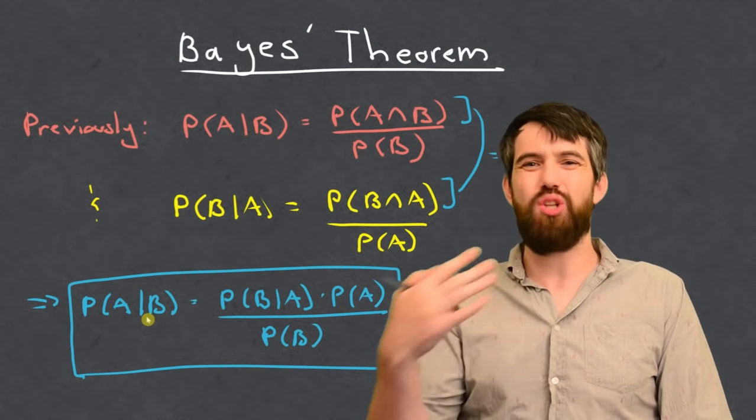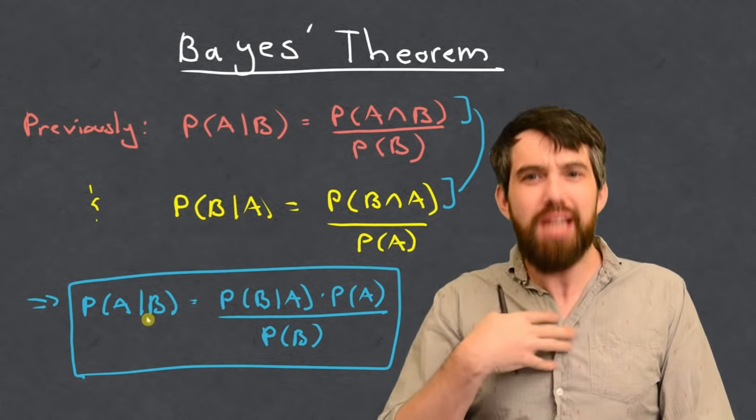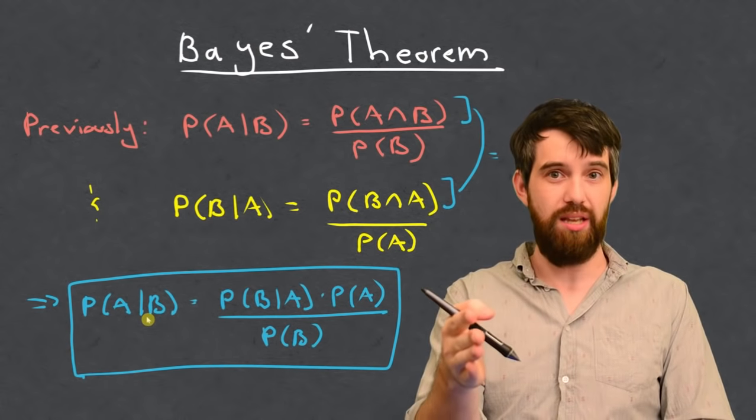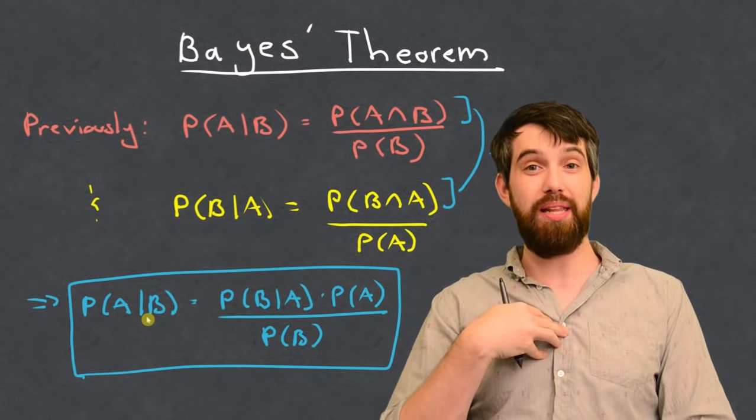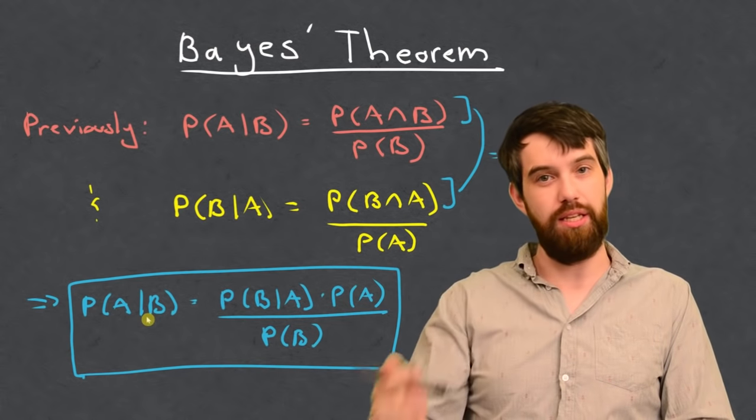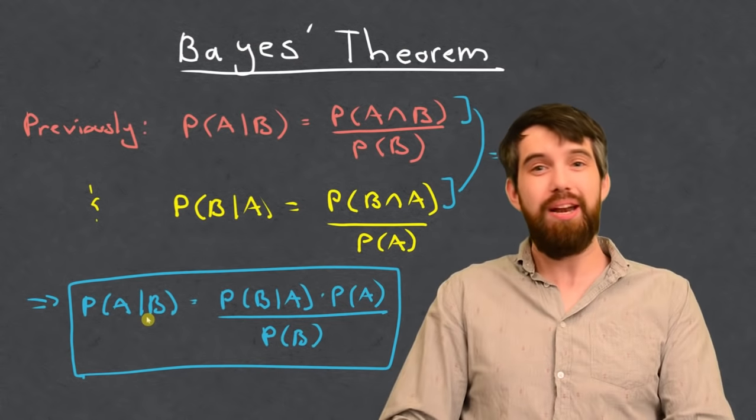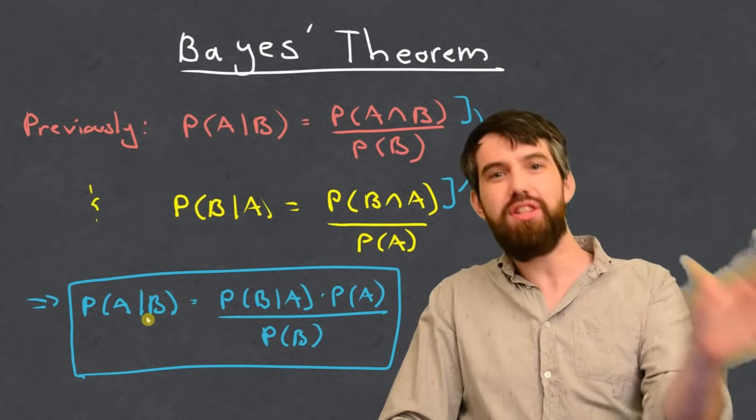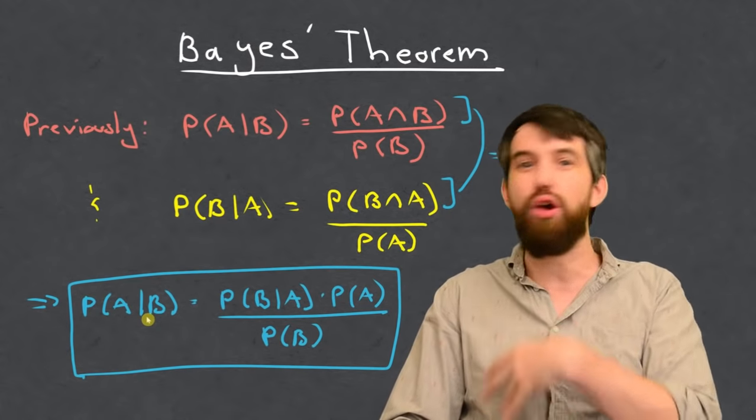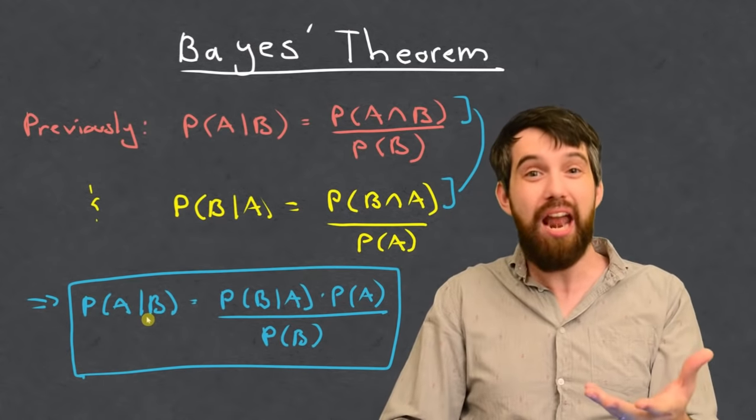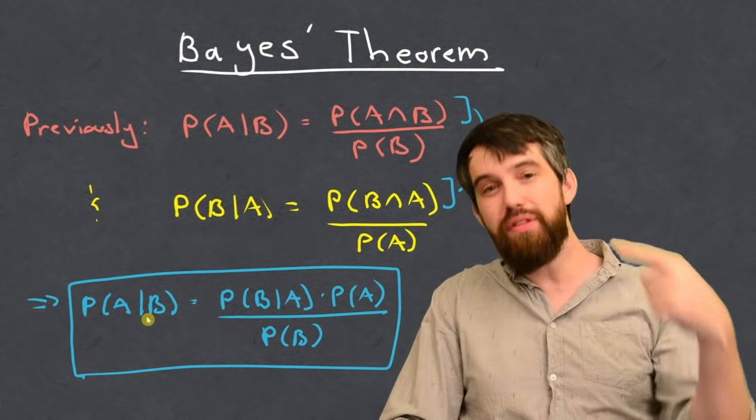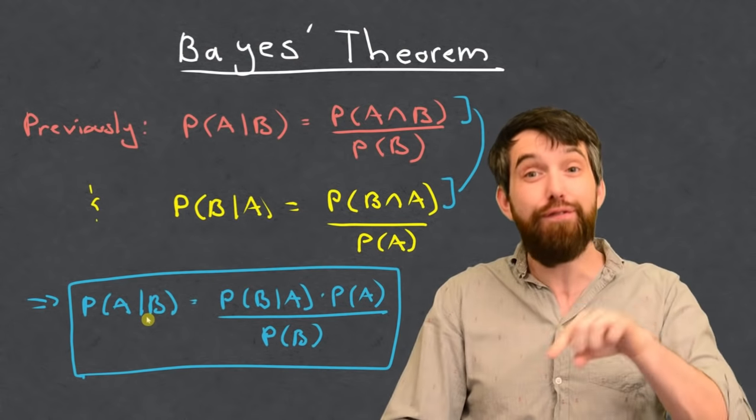Now, the reason why this is so helpful is that sometimes computing the probability of A given B is easy, and sometimes the probability of B given A is easy. Sometimes they're both easy, but in any scenario where one of those two is easy to compute, maybe you can go out of the real world and collect some data and figure it out.